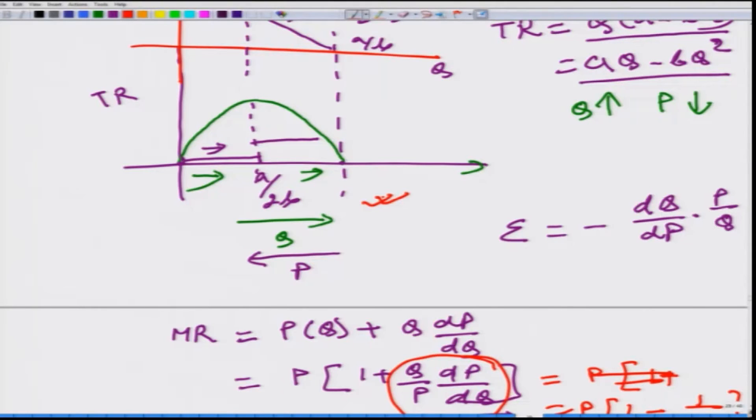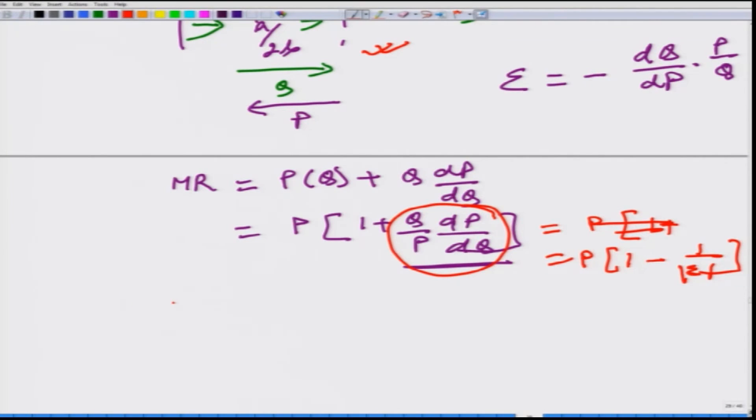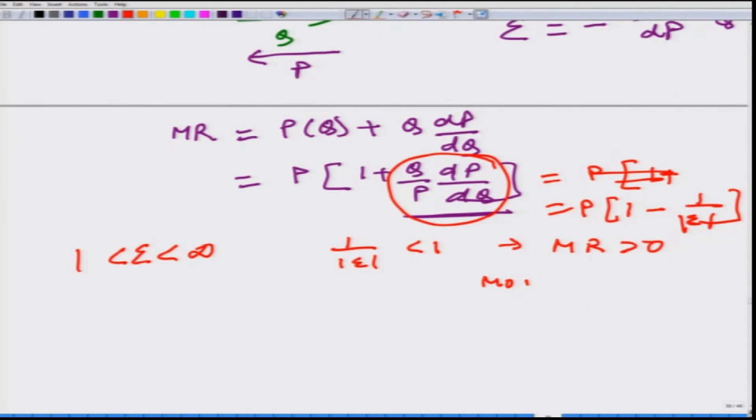We can relate what we can say that when the price elasticity of demand is elastic, what does it mean? If elastic, it simply means that epsilon is between 1 and infinity. In this case, what would be 1 divided by mod epsilon? It would be less than 1 and therefore MR is going to be positive. In this case, monopolist can increase the revenue by decreasing the price.